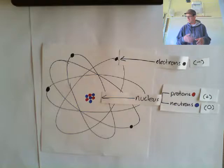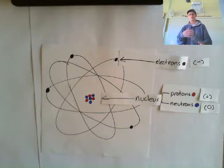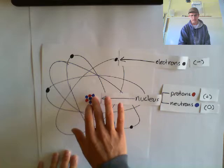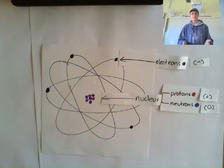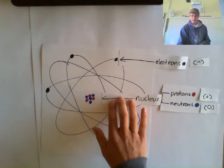The second thing to note is the size of the nucleus compared to how far away the electrons are. If we took the nucleus and said it was the size of a grape, the electrons would be one and a half kilometers away. So what that means is that most of an atom is empty space — there's nothing in between, it's all empty space.